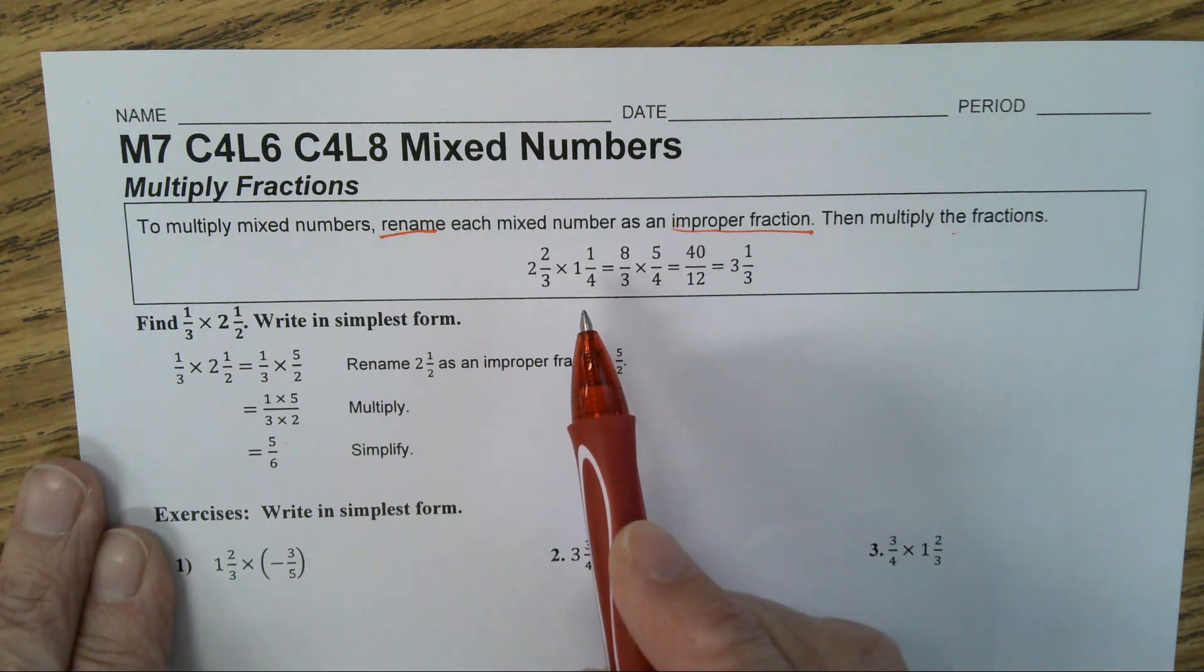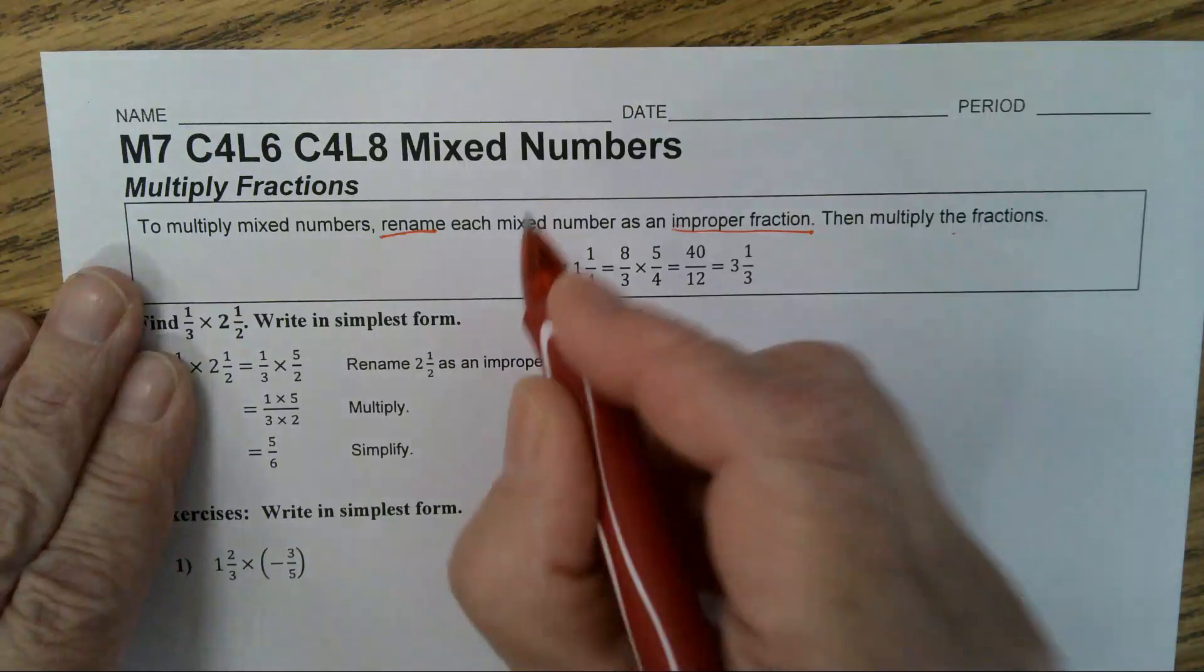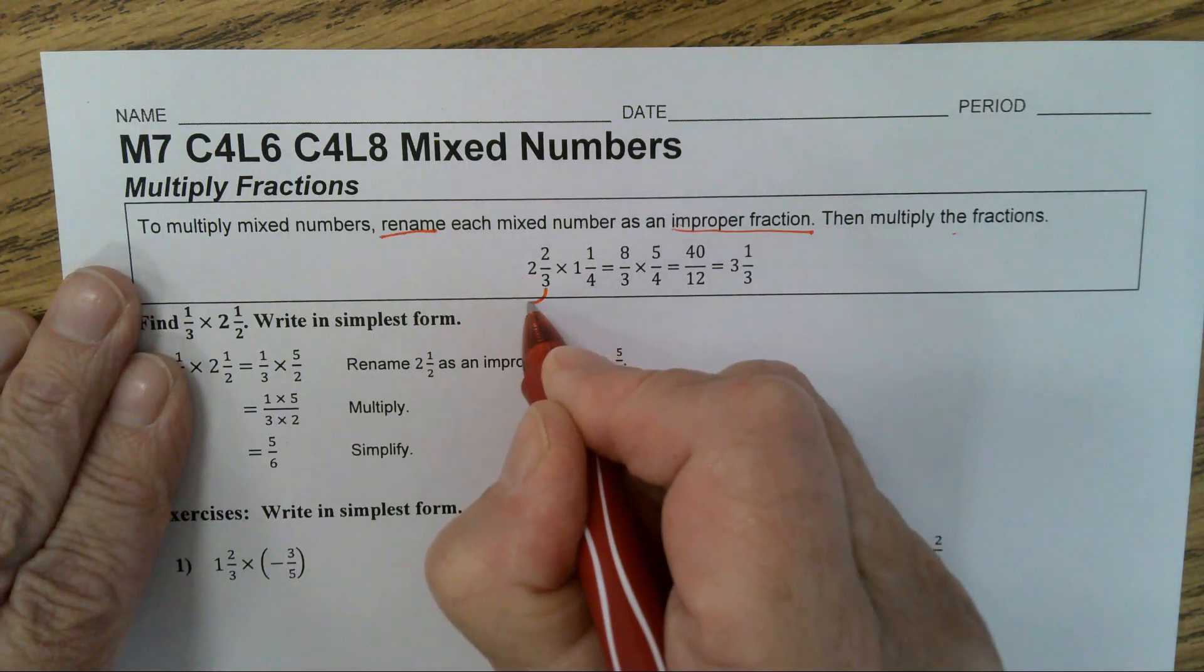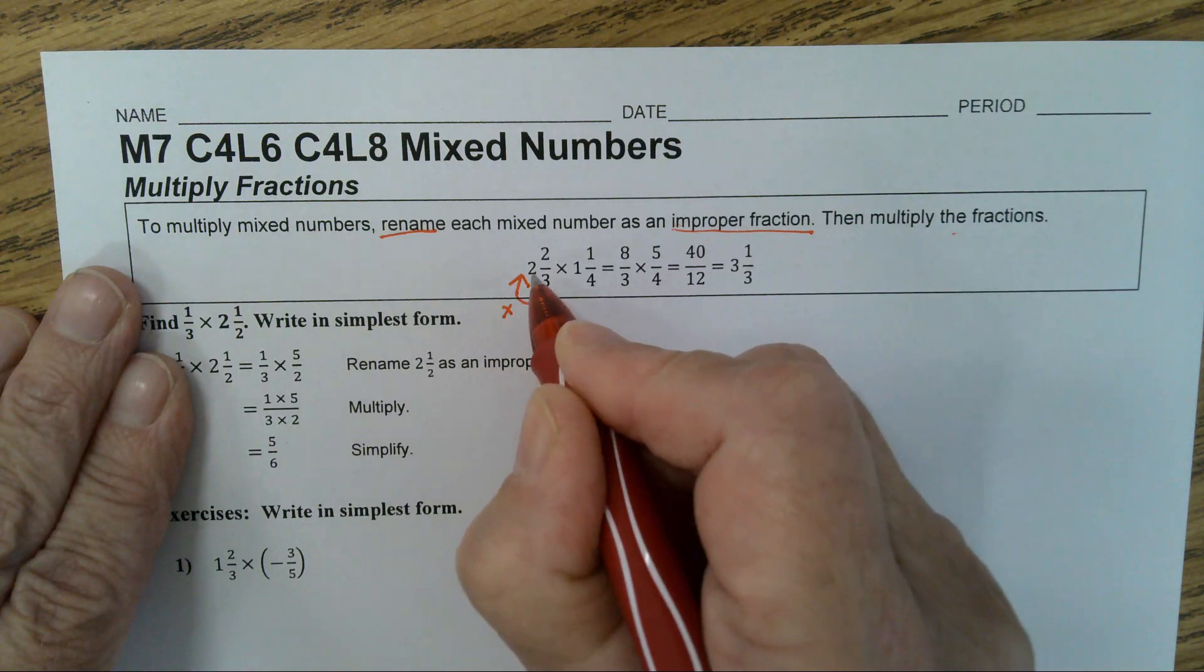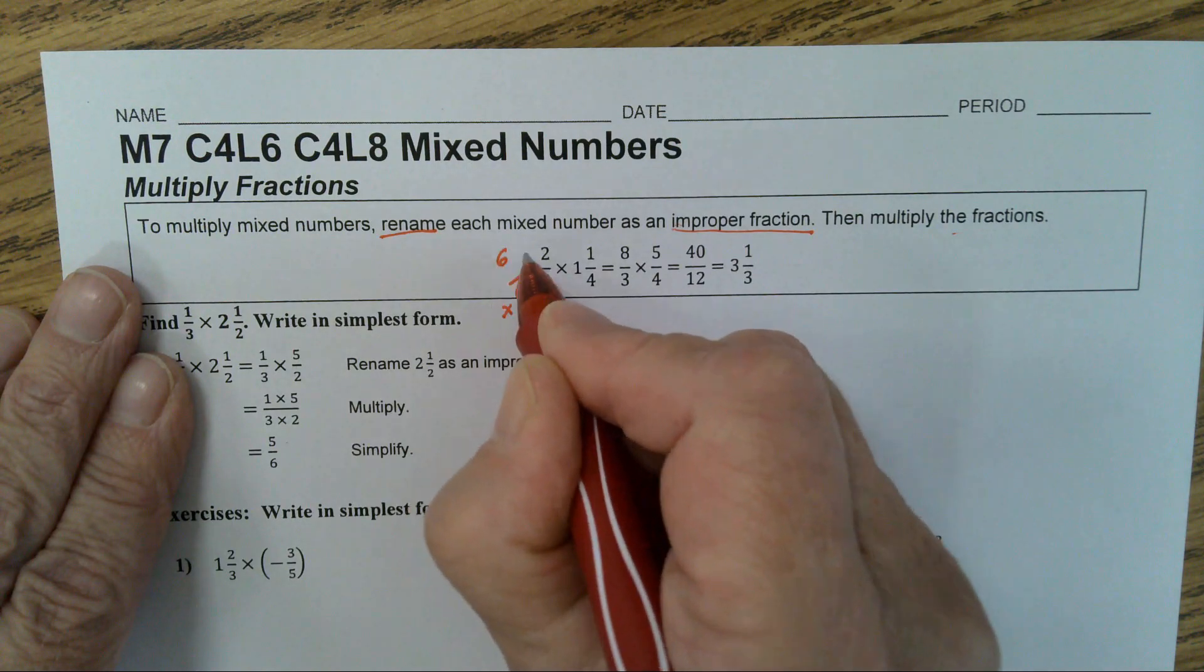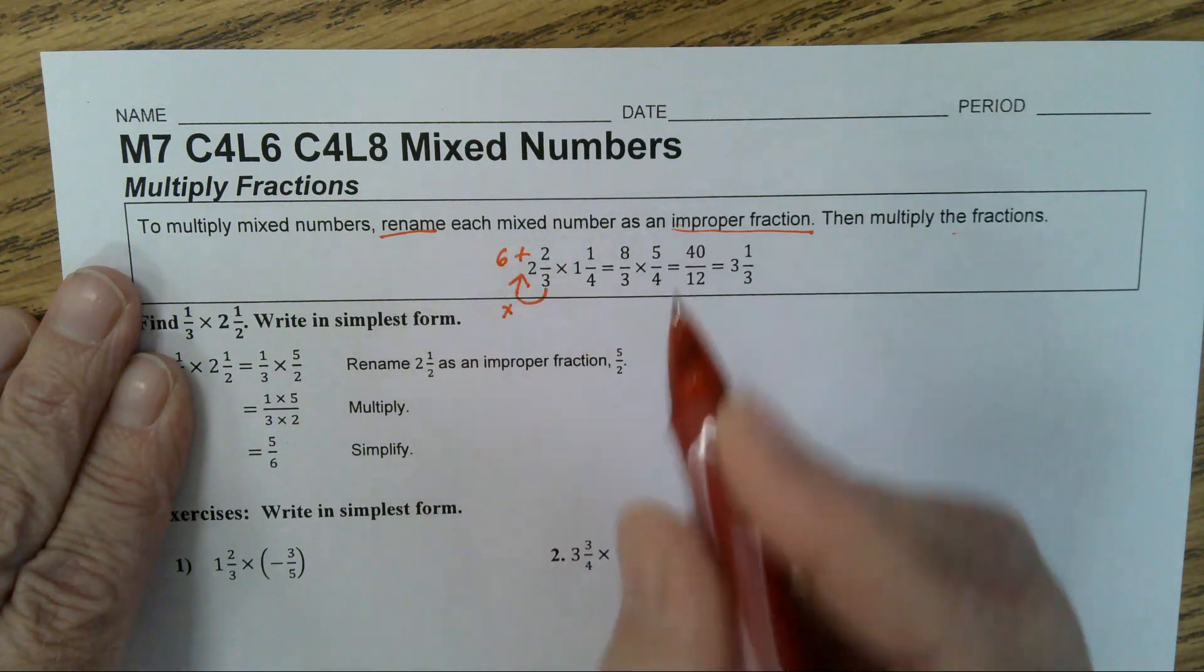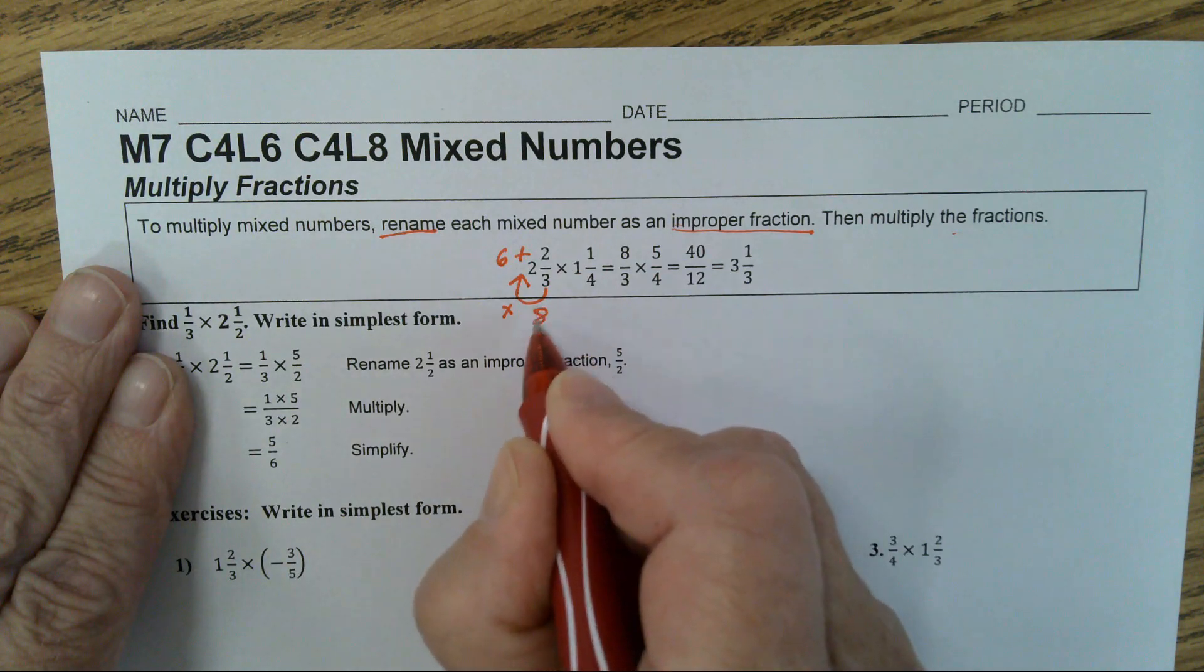You multiply, add, and put it on top. Yes, you start with the denominator. You multiply it times the whole number. 3 times 2 is 6. And 6 plus 2 is 8. And you put 8 over 3.